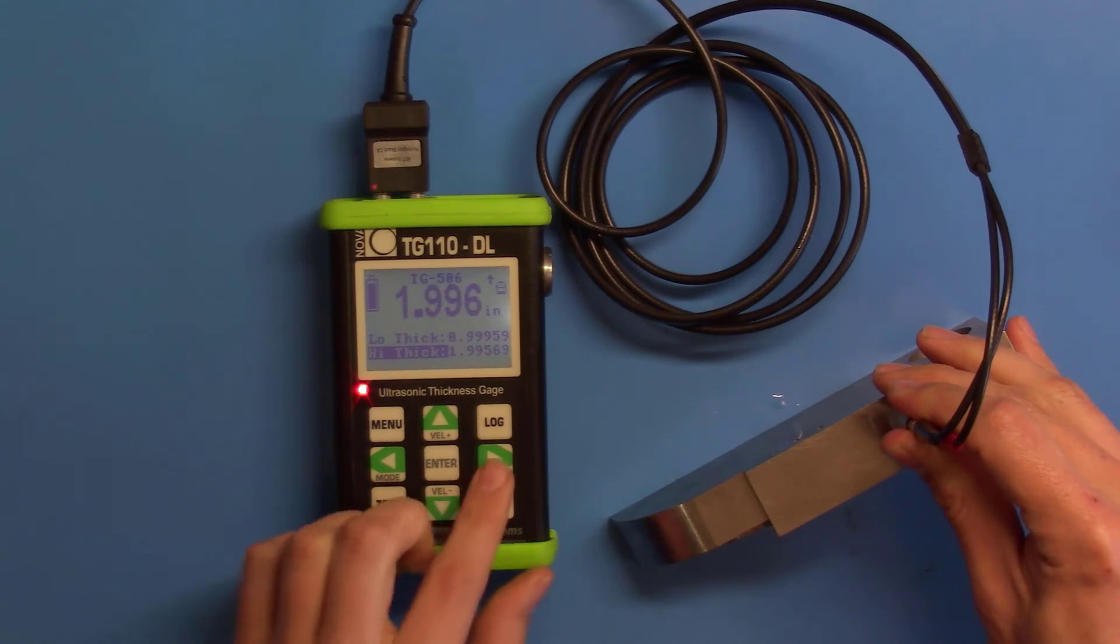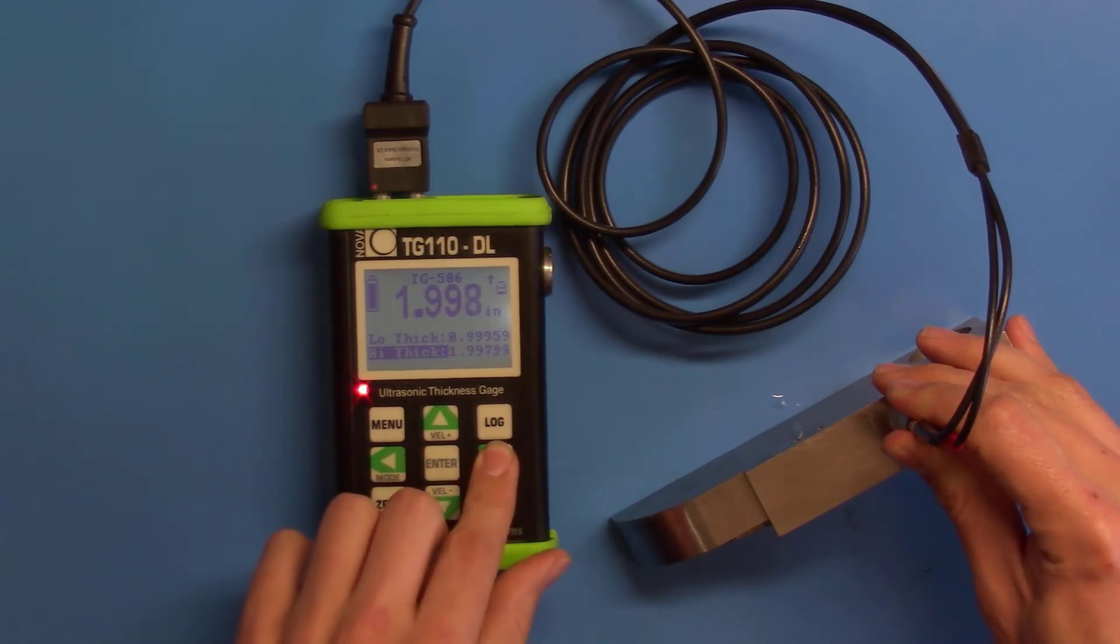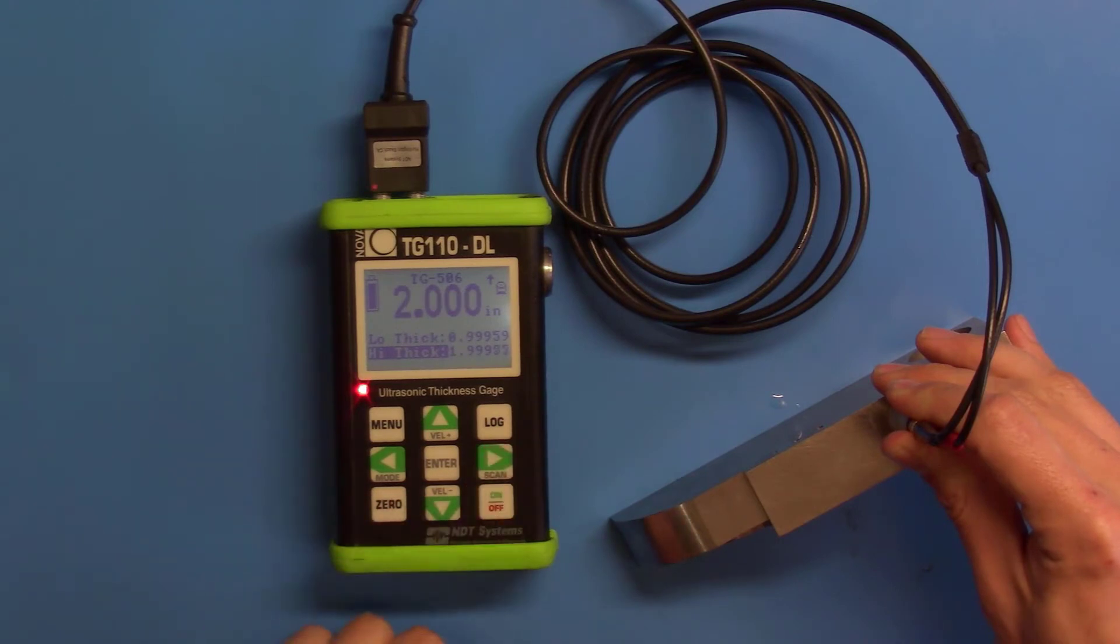Again, adjust the arrow keys to adjust the display. While still coupled to the high, go ahead and push menu. This will save the two-point calibration.